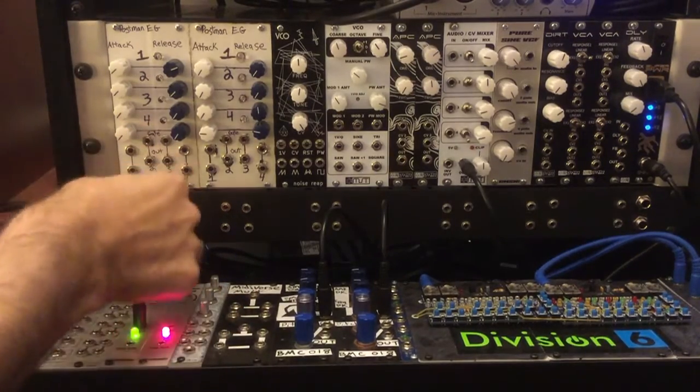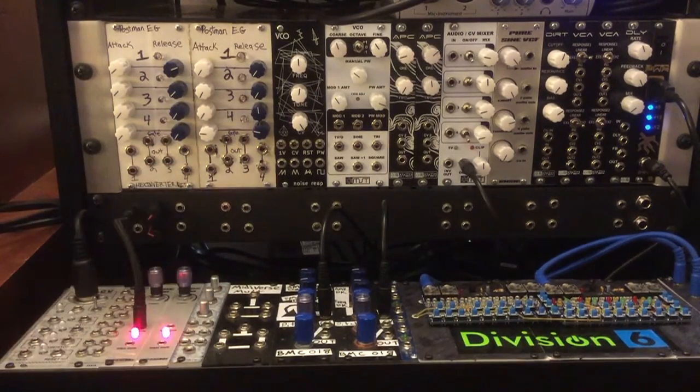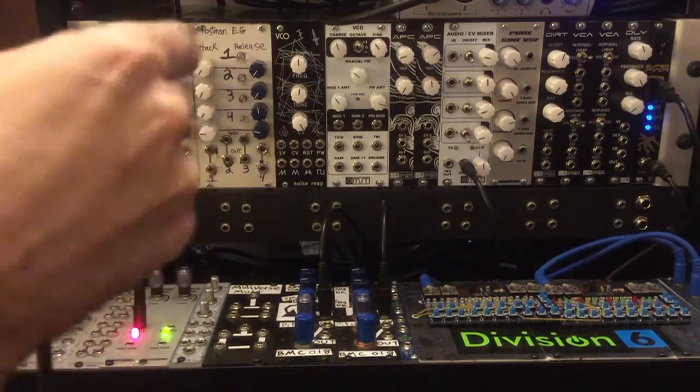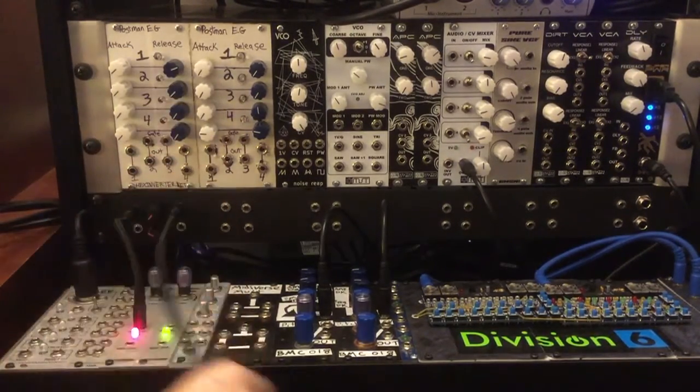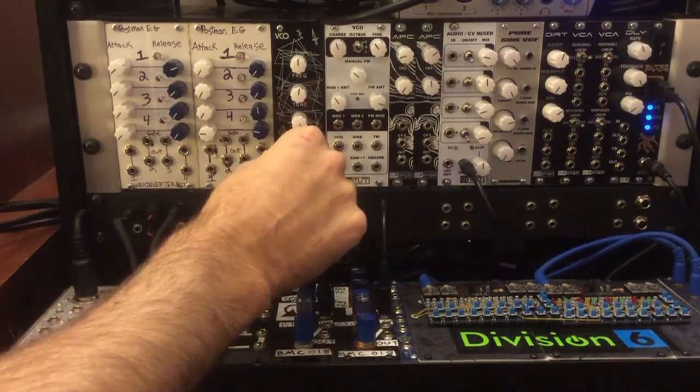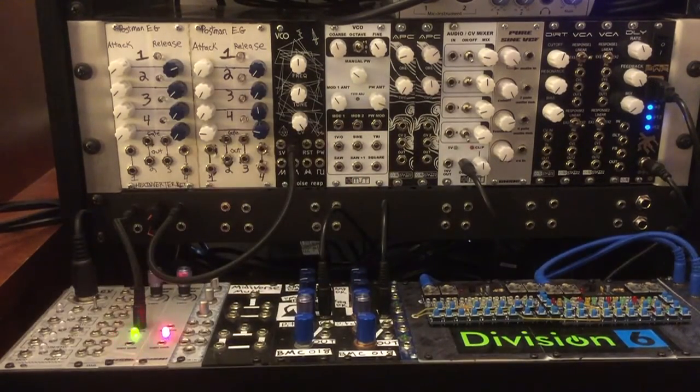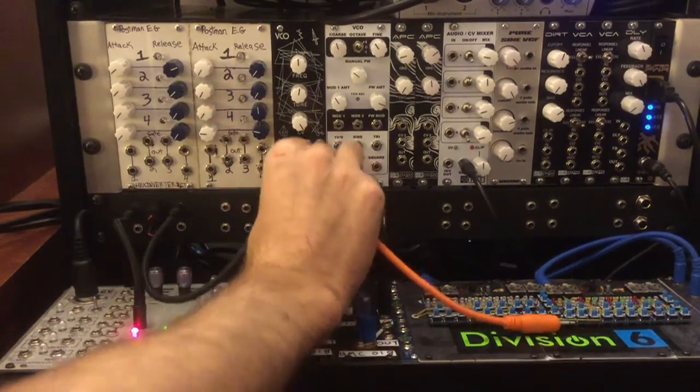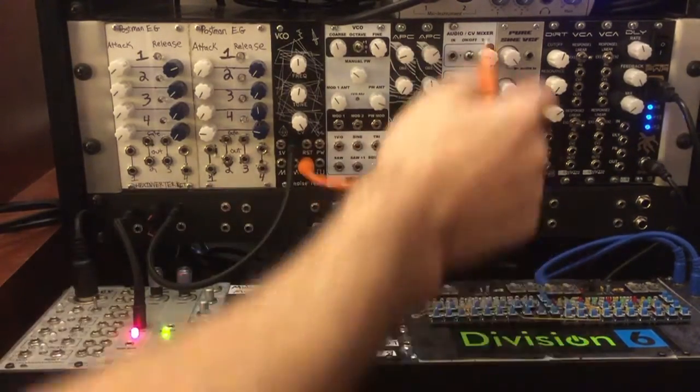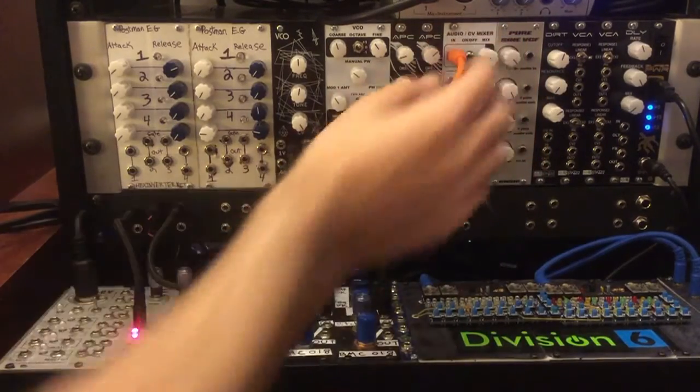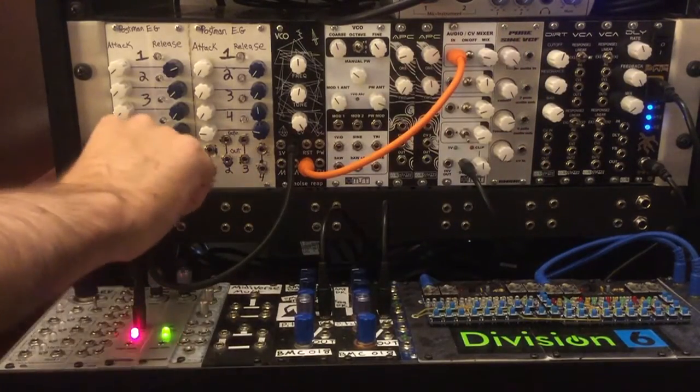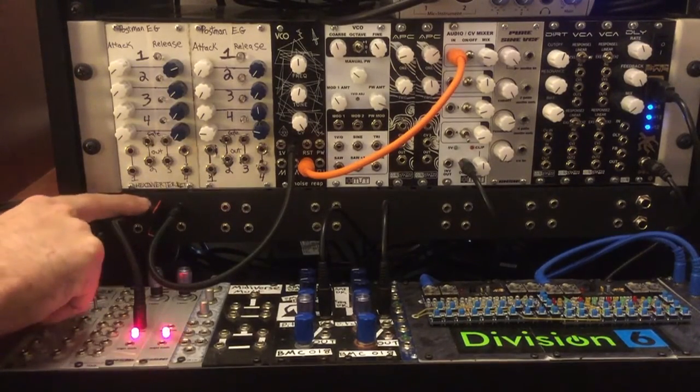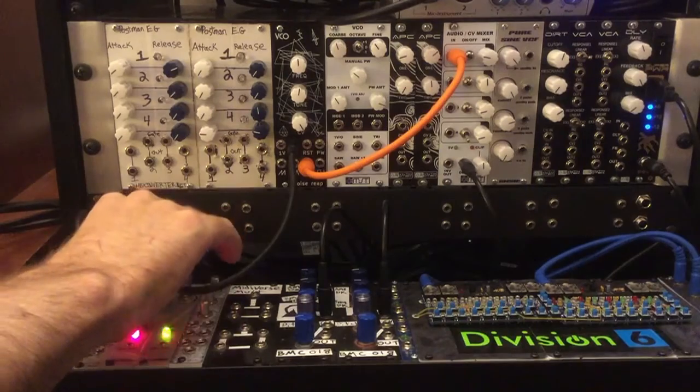I'm going to do a quick example here. We're going to run our LFO into our passive attenuator. I've got the amount turned all the way down right now. Then we're going out of that into our control voltage modulation input for our VCO for frequency modulation. And then as we slowly turn up the attenuator here you can hear the frequency being modulated more and more from the LFO.